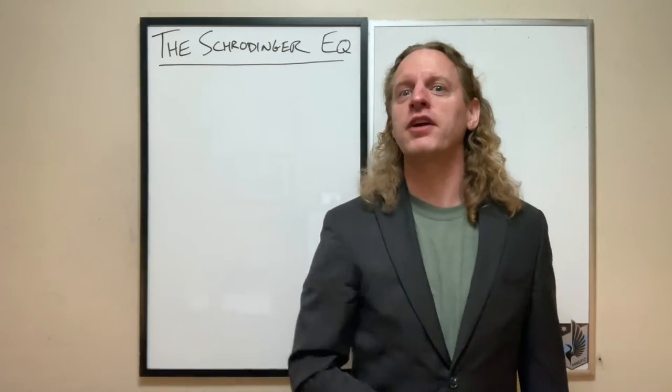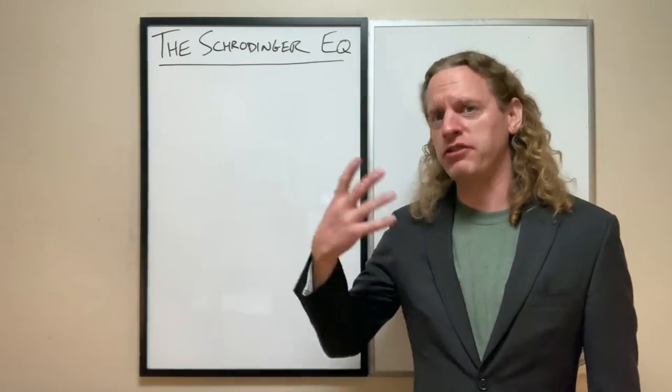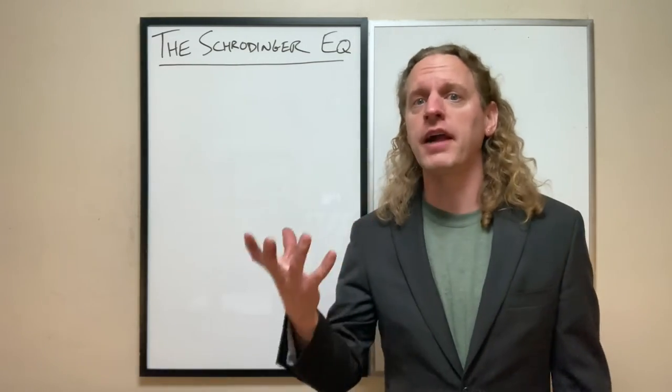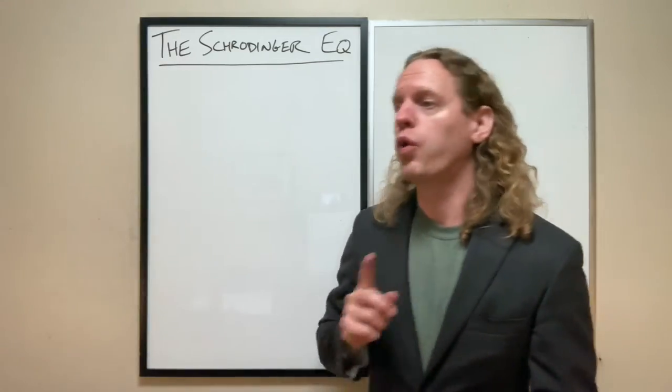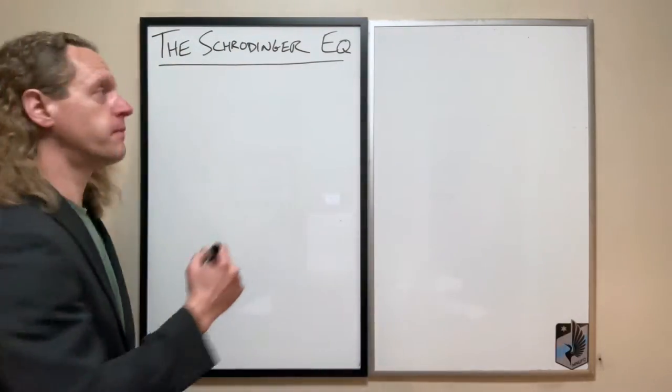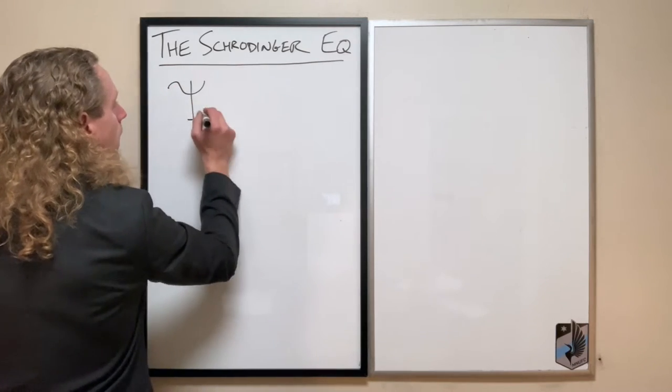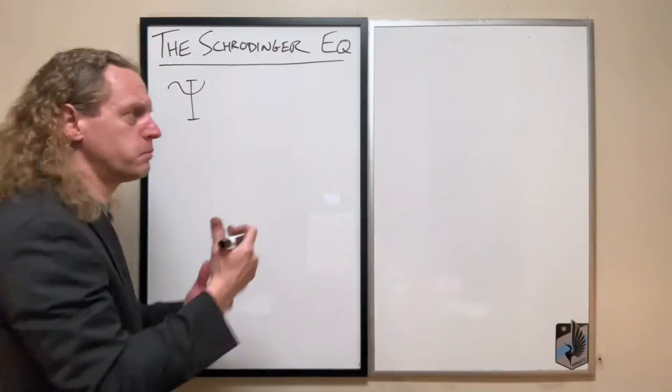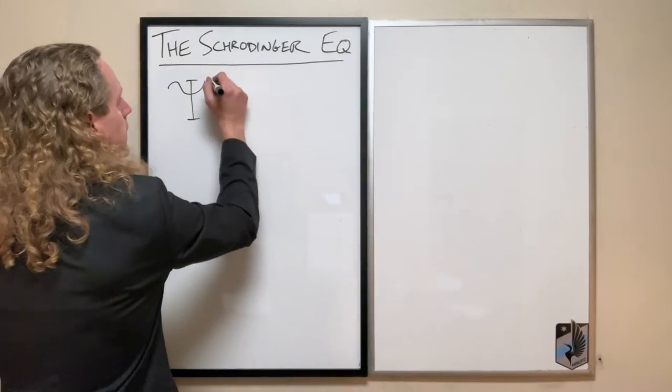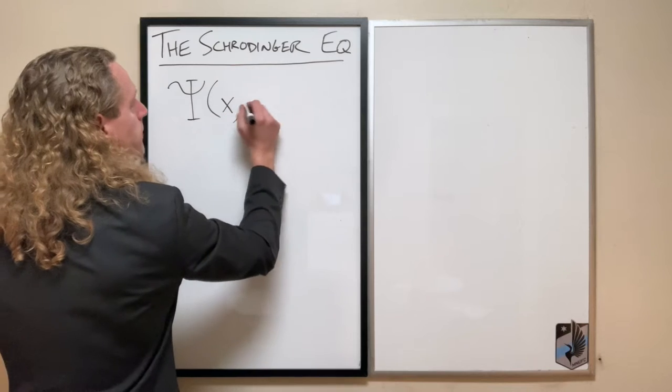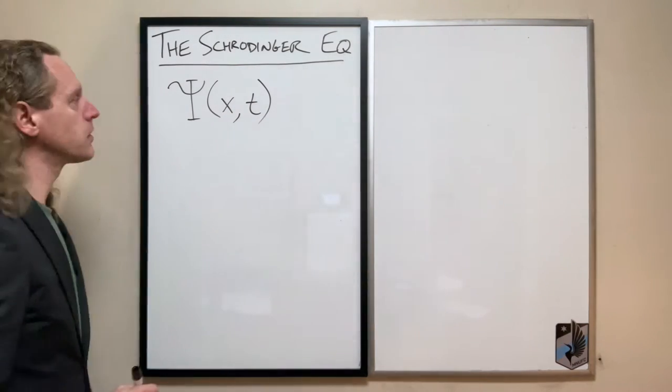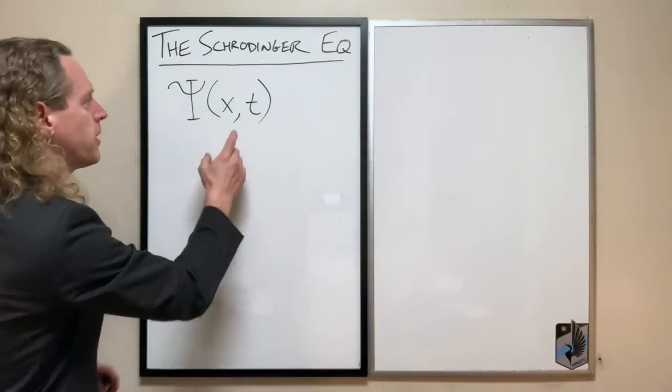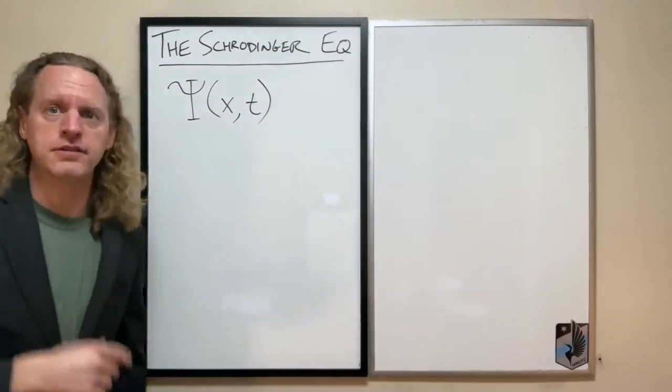So the first thing we're going to start off with is we just talked about probability functions over continuous variables, and that's exactly what the Schrödinger equation is based on. We're going to have some function, we're going to call it, at least for now, capital Psi. I think that's P-S-I, but you call it Psi. And it's a function not only of space x, but of time t. And from here on out, I'm just going to omit the x and the t part, but it varies both in time and space, just to be entirely clear.